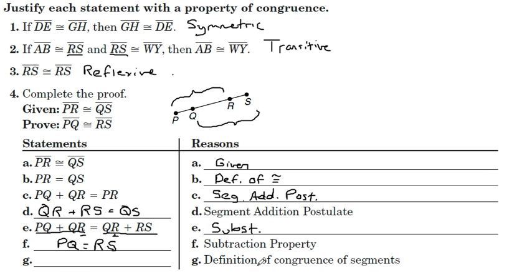And then lastly, we have the definition of congruent segments, similar to what we did in B. Let's do the geometry notation. Segment PQ is congruent to segment RS. And there you are.